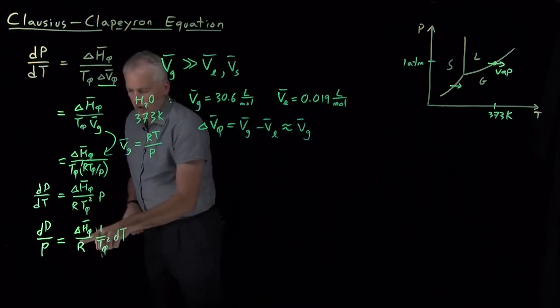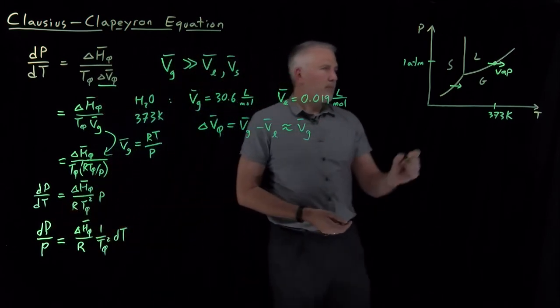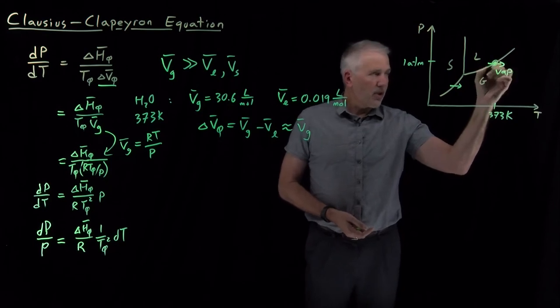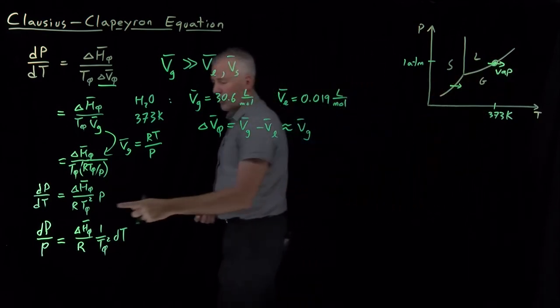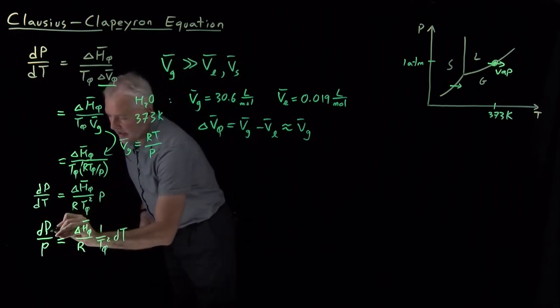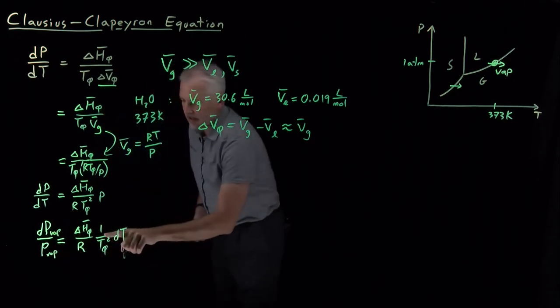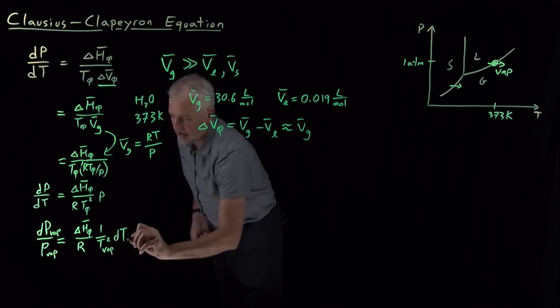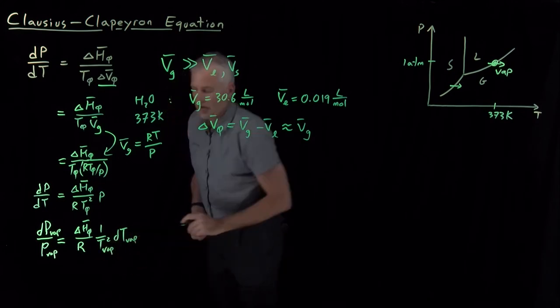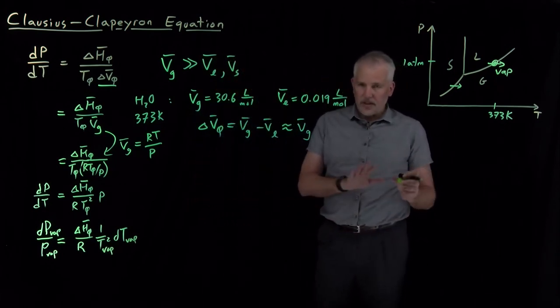And I've been a little bit sloppy with my subscripts, but these pressures and temperatures that I'm talking about, these are the pressures and temperatures of the phase change. Pressure of the phase change, temperature of the phase change. So, this P, dP, as well as the pressure are the pressure at which the vaporization takes place. This T of the phase change, temperature of vaporization, and dT are both for temperature of vaporization. So, those are all the same variables. So, I've got all the T's on one side, all the P's on the other.